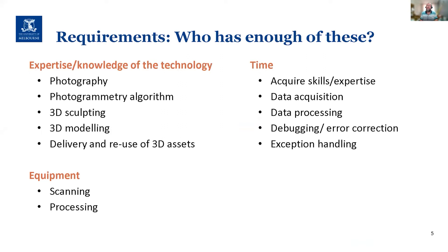Looking firstly at people and expertise, there are certain requirements for implementing new technologies. In this particular case, there's a lot of interdisciplinary knowledge required: understanding photography processes, the photogrammetry algorithm — how it works and how it fails — 3D sculpting, 3D modelling, delivery and reuse of final outputs, having the equipment to do both scanning and processing, having the time to acquire skills and expertise, acquire the data, do all the data processing, and recovering from when things go wrong. This includes handling exceptions — things that are extremely big, small, or complex compared to most things done fairly easily.